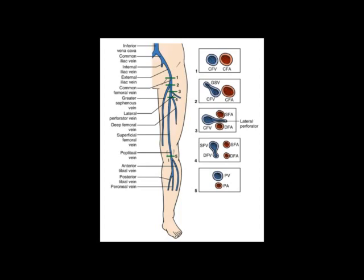Scanning and compressing every one to two centimeters, the next key point is where the greater saphenous vein takes off from the common femoral vein. It almost looks like a little bleb coming off the superomedial side — almost at a 10 to 11 o'clock position of the common femoral vein — again sitting medial to the common femoral artery.